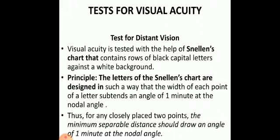For the tests for visual acuity, there are separate tests for distant vision and near vision. Visual acuity for distant vision is tested with the help of Snellen's chart, which contains rows of black capital letters against a white background. The principle is that the letters of the Snellen's chart are designed such that the width of each point of a letter subtends an angle of one minute at the nodal angle. Thus, for any closely placed two points, the minimum separable distance should subtend an angle of one minute at the nodal angle.